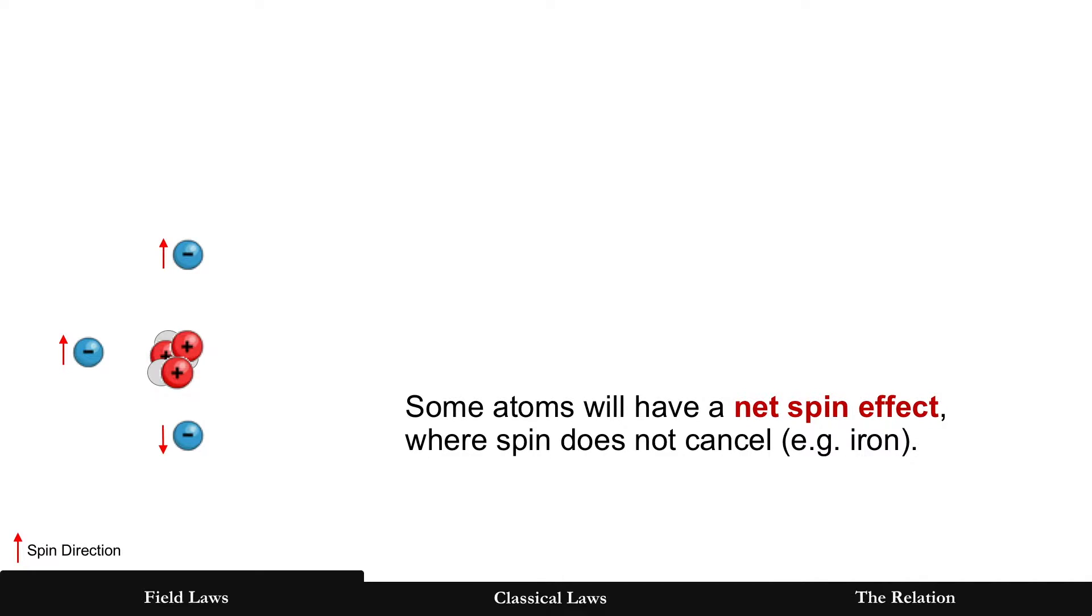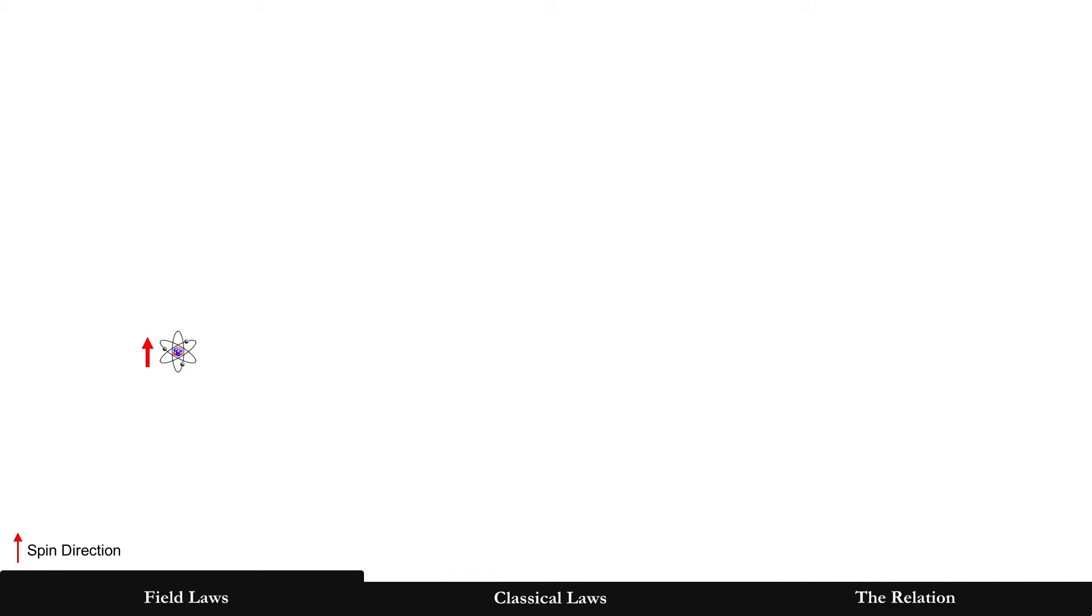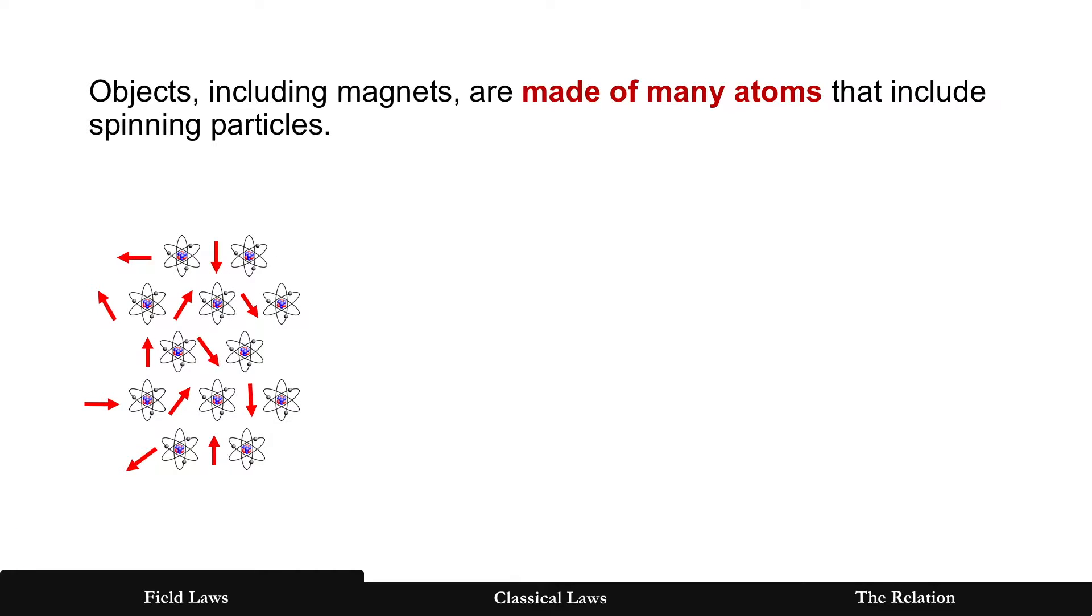However, some atoms will have a net spin effect where spin does not cancel, and we'll show that here as an atom with a net effect. Objects which include magnets, for example, are made of many atoms that include spinning particles.